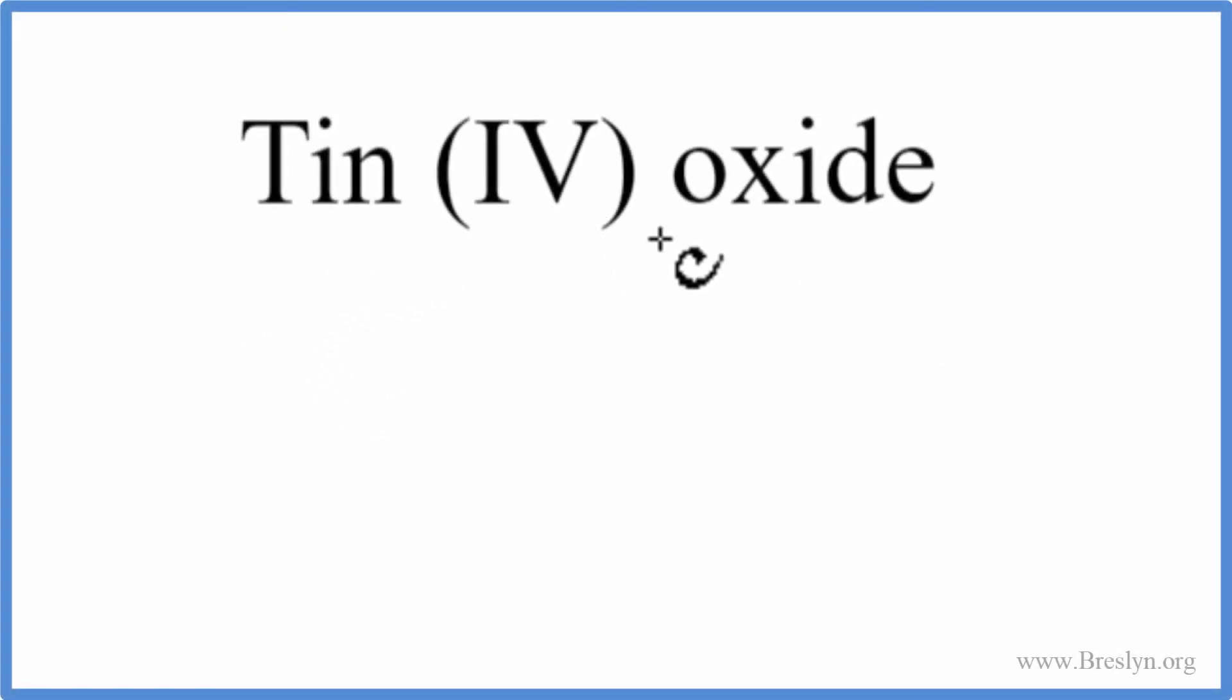To write the formula for tin four oxide, we look up tin on the periodic table, and the element symbol is Sn. We then look up oxide, that's the oxygen we're looking for, and that's O.